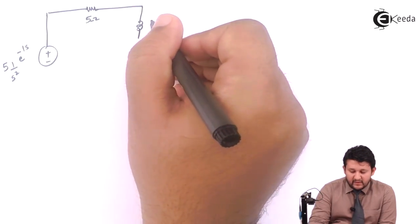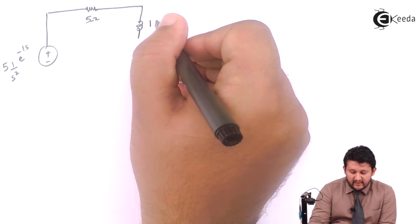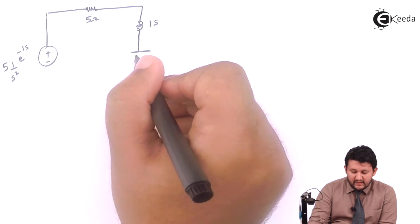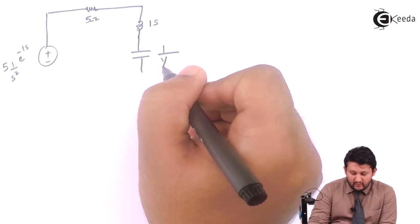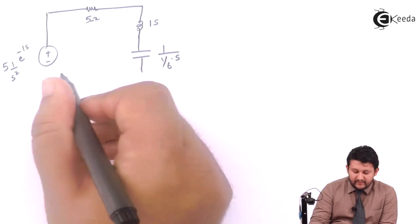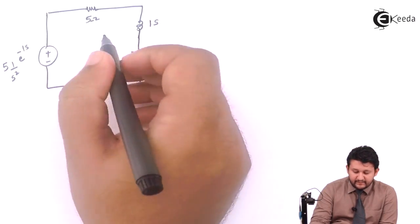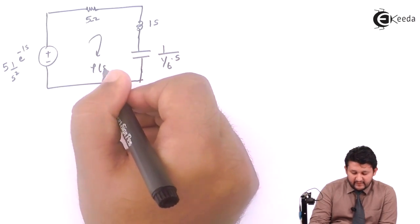You have an inductor, your L become LS, the value of L is 1 into S. Your C become 1 upon CS, will be 1 upon, the value of C is 1 upon 6 into S. This will be your circuit for I of S.